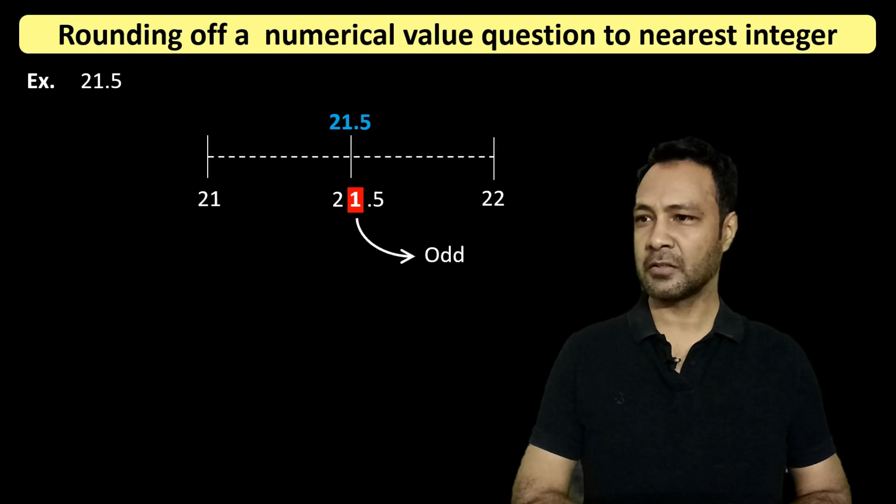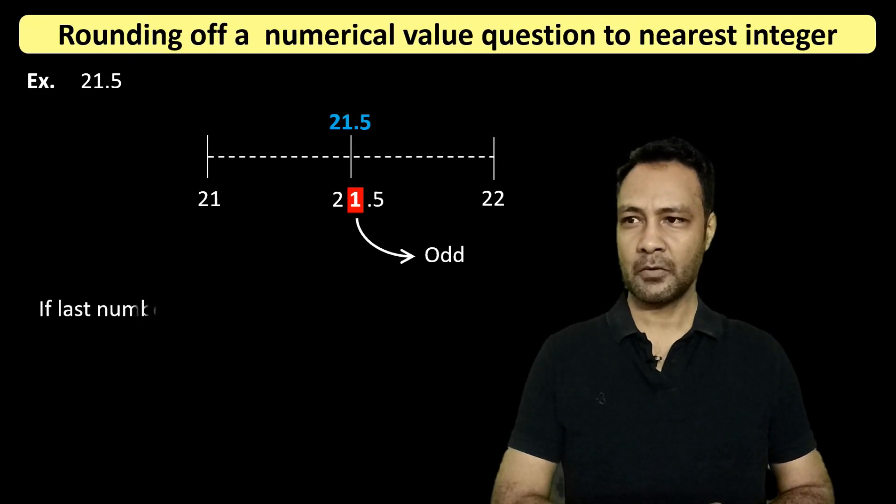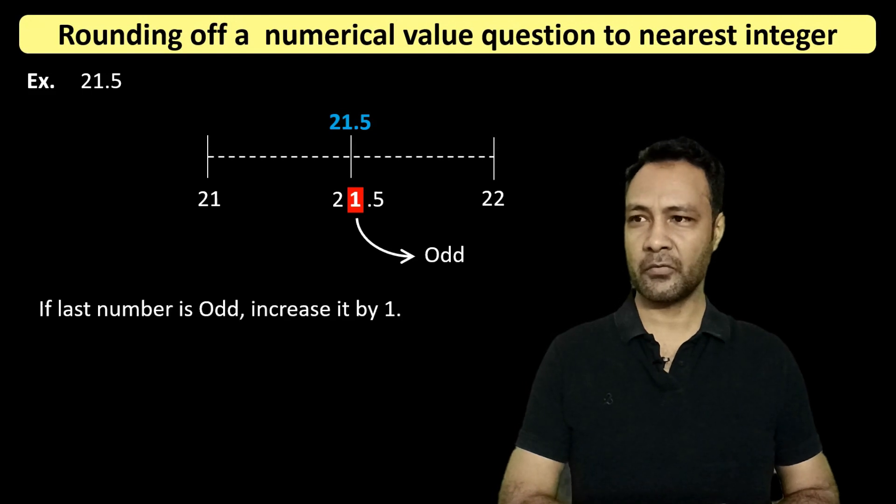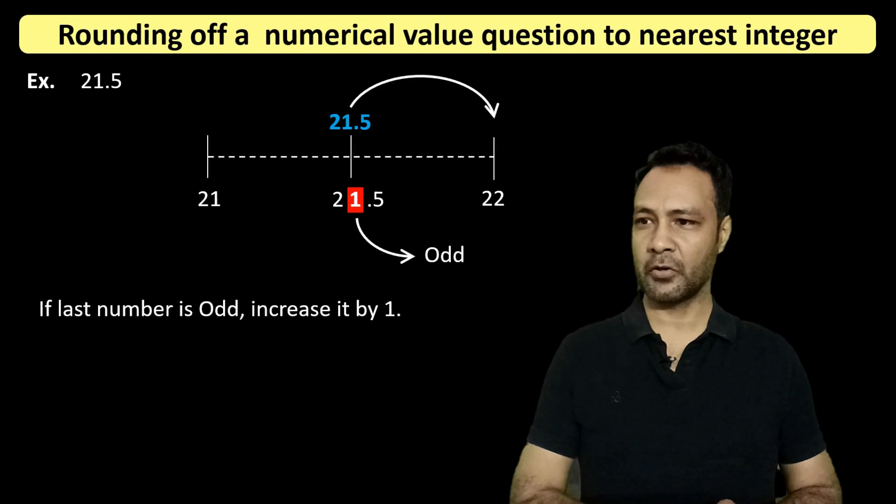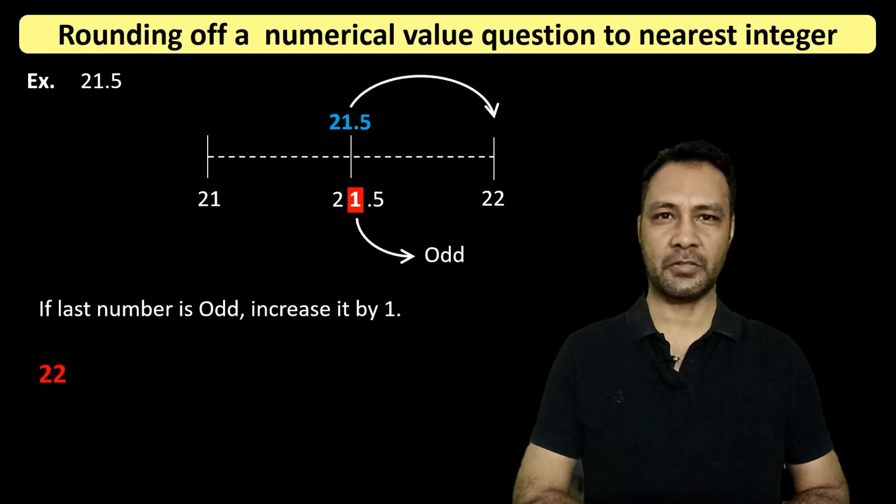So now in this case, we will round off the answer 21.5 to 22, and that would be our answer. Thank you.